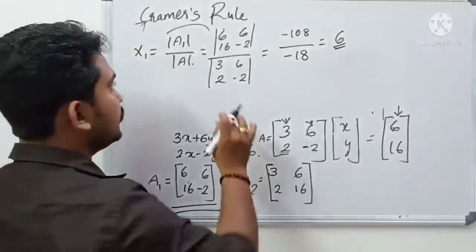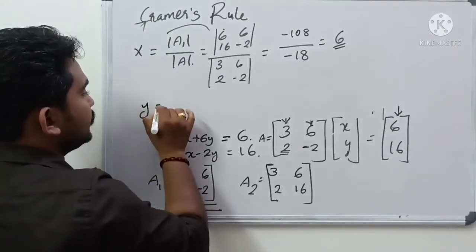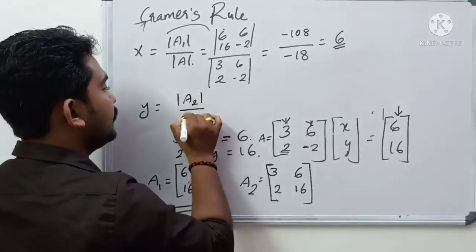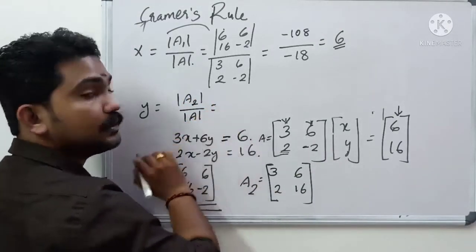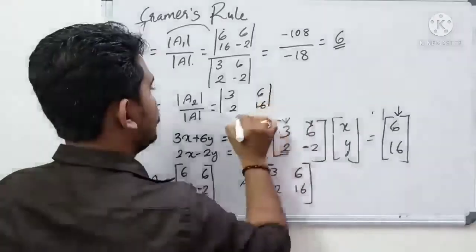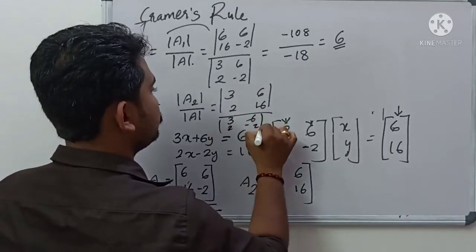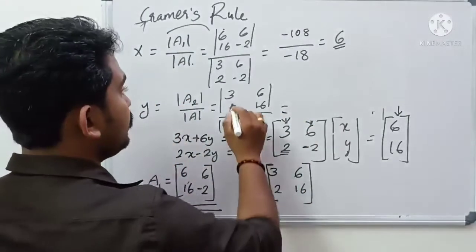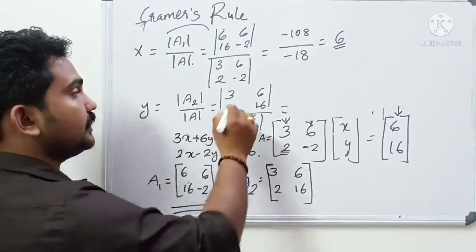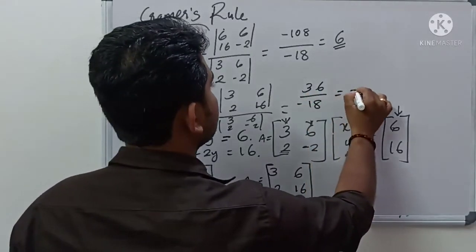So x1 is equal to a value. Y is equal to x2. Y is equal to determinant of A2 divided by determinant of A. Determinant of A2: 3, 6, 2, 16. Determinant of A: 3, 6, 2, minus 2. This equals 16 times 3 minus 6 times 2, giving 68 minus 12, so minus 1, which is minus 36 divided by minus 18, giving minus 2.